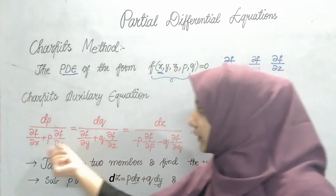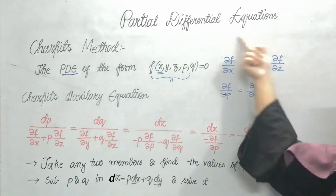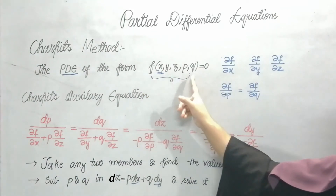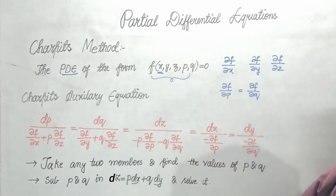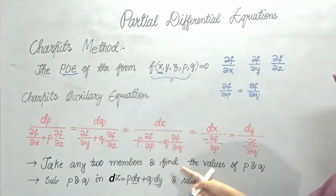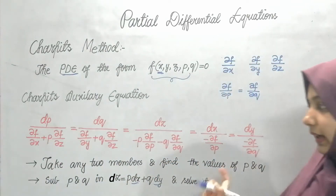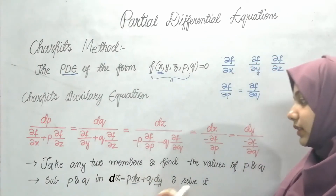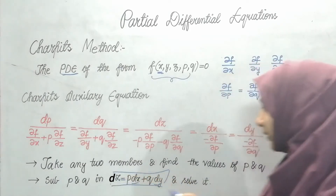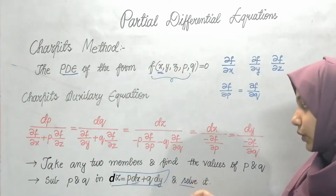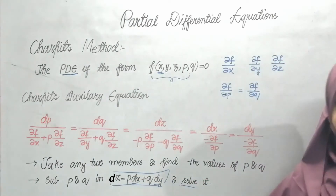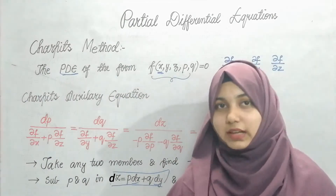After substituting into the auxiliary equation, I take any two members and solve for p and q. After getting the values of p and q, I simply substitute into dz = p dx + q dy and solve it. Solving means integrating. Let's quickly see some examples so it will be clear how to solve it.